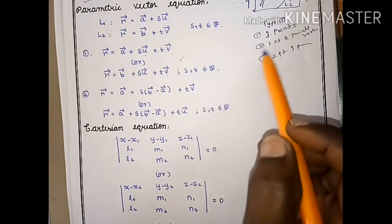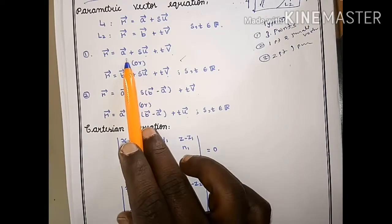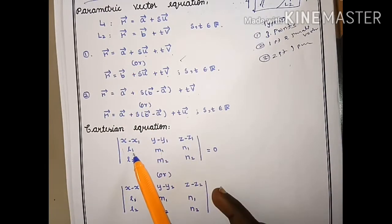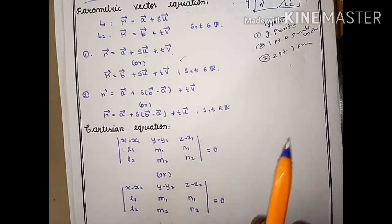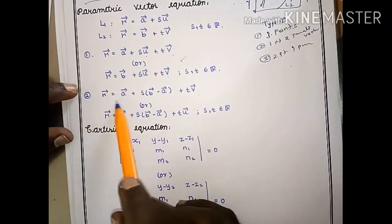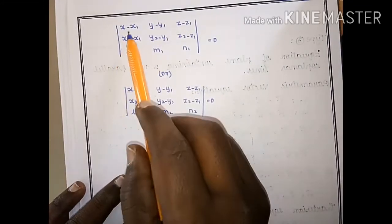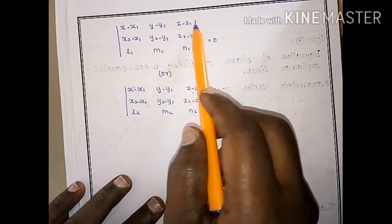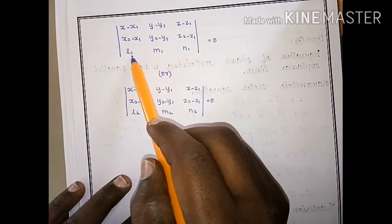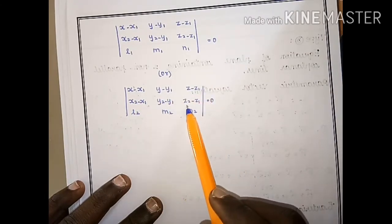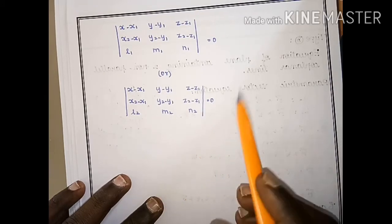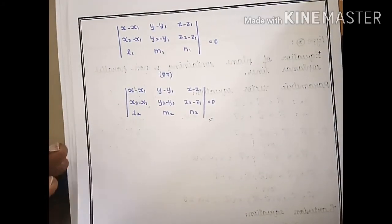Cartesian equation — Type 2 formula with one point: determinant of (x−x1, y−y1, z−z1), (L1, M1, N1), (L2, M2, N2) = 0. For two points given, the second formula is: determinant of (x−x1, y−y1, z−z1), (x2−x1, y2−y1, z2−z1), (L1, M1, N1) = 0, or equivalently with (L2, M2, N2) in the third row. Line 1: (x−x1)/L1 = (y−y1)/M1 = (z−z1)/N1; Line 2: (x−x2)/L2 = (y−y2)/M2 = (z−z2)/N2.